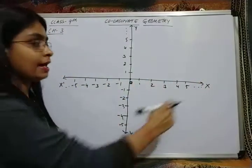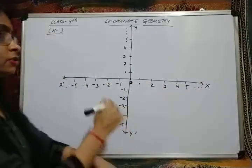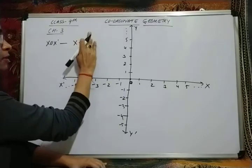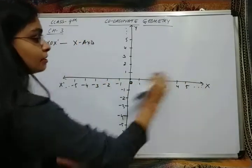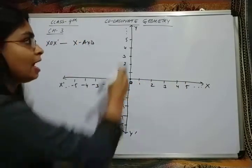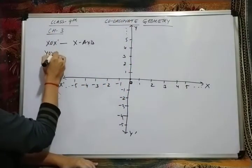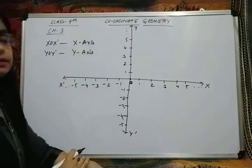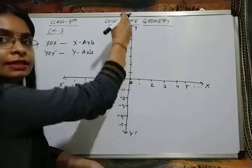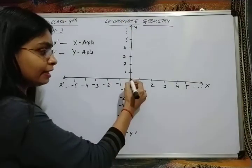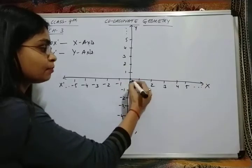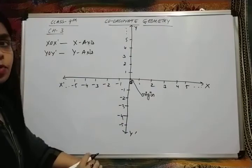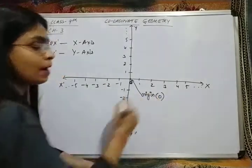The horizontal line x–O–x dash is known as the x-axis. The vertical line y–O–y dash is known as the y-axis. They intersect at a point which is the 0, and this point is known as the origin, denoted by O.